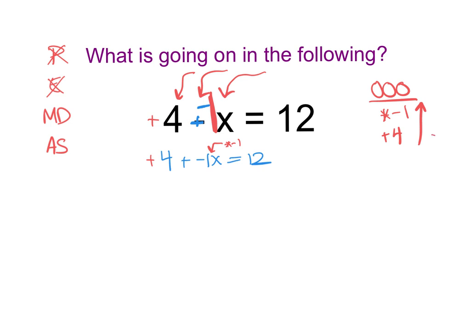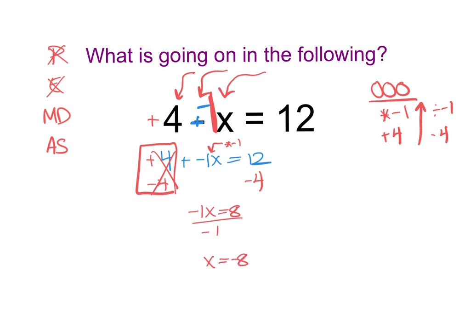Now we undo in reverse. The opposite of plus 4 is minus 4. We subtract 4, and those become 0, leaving negative 1x equals 8. Then we use division to undo that negative 1. We end up with x equals negative 8.